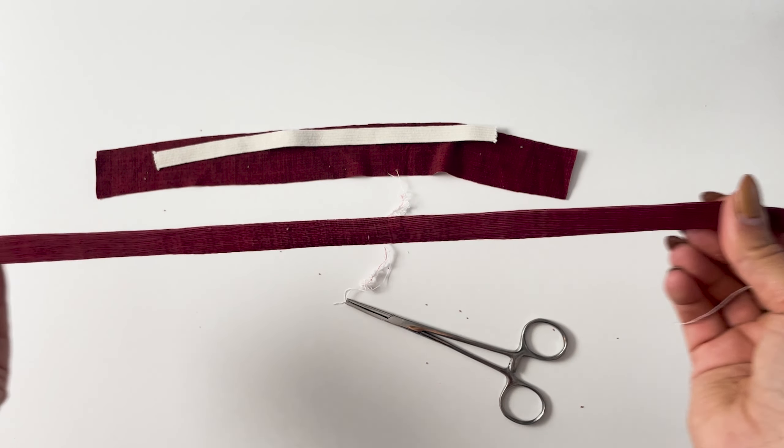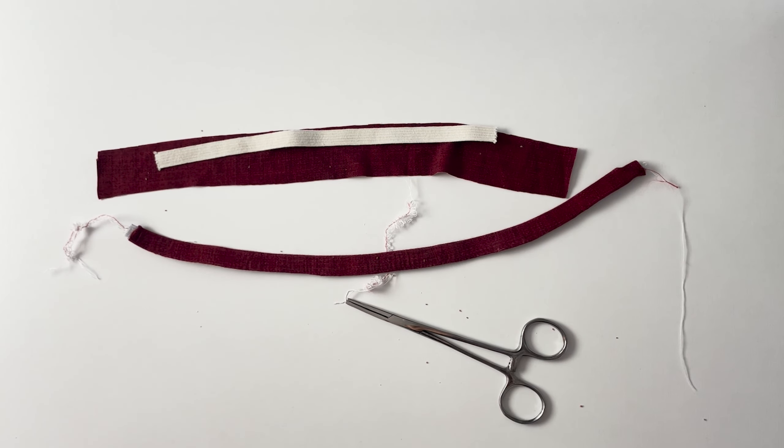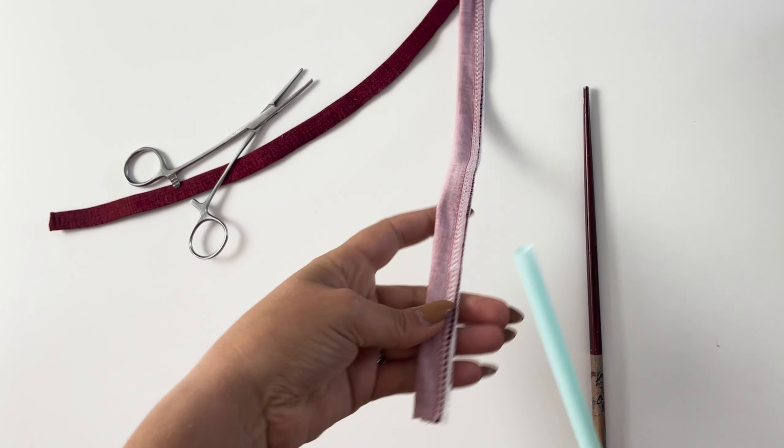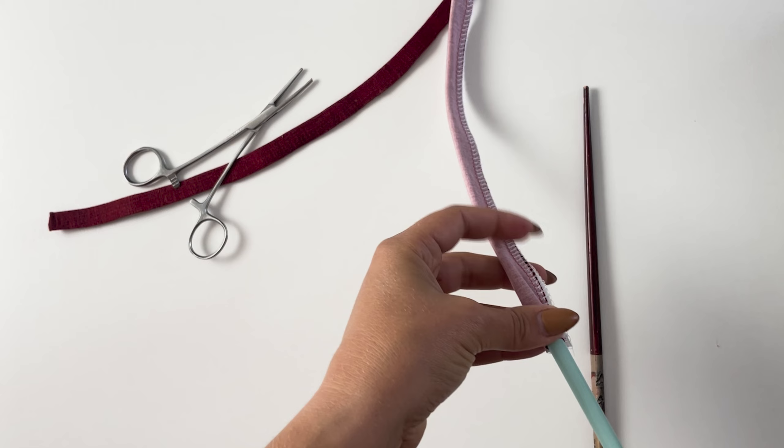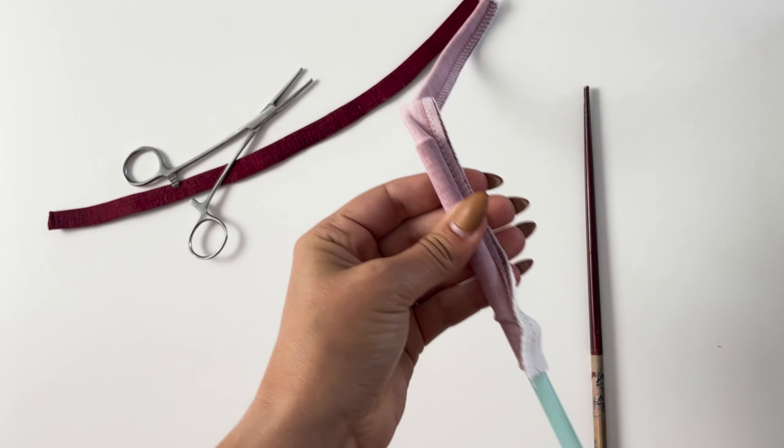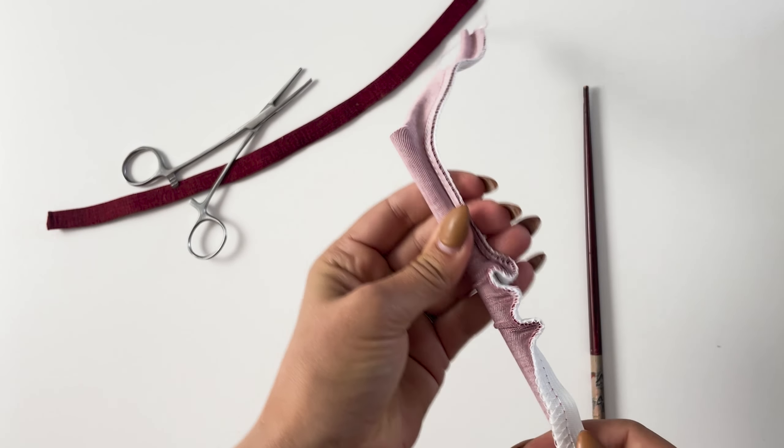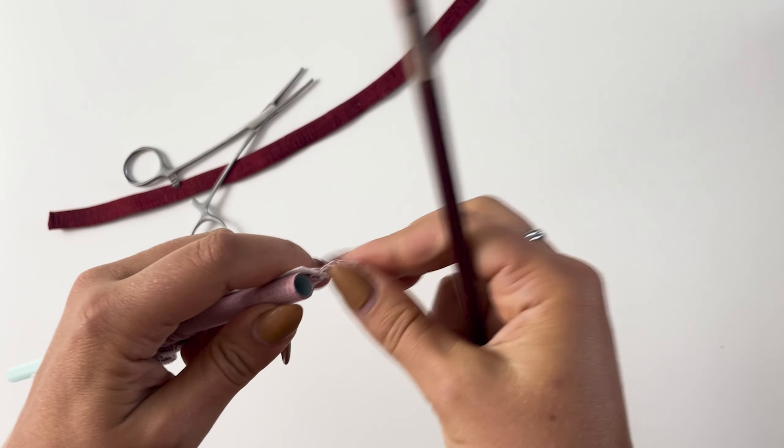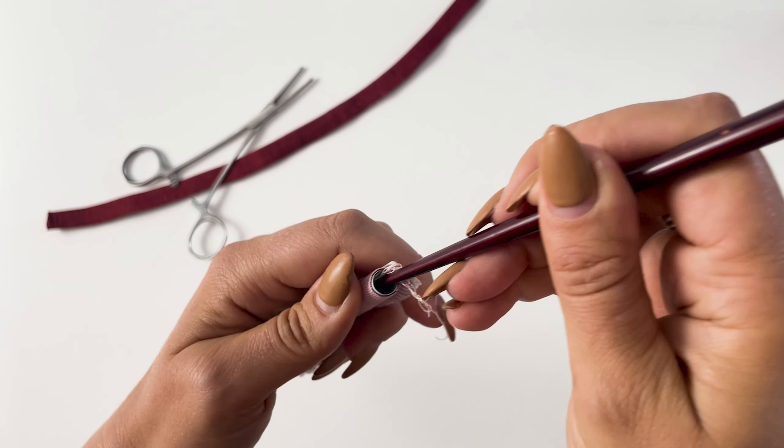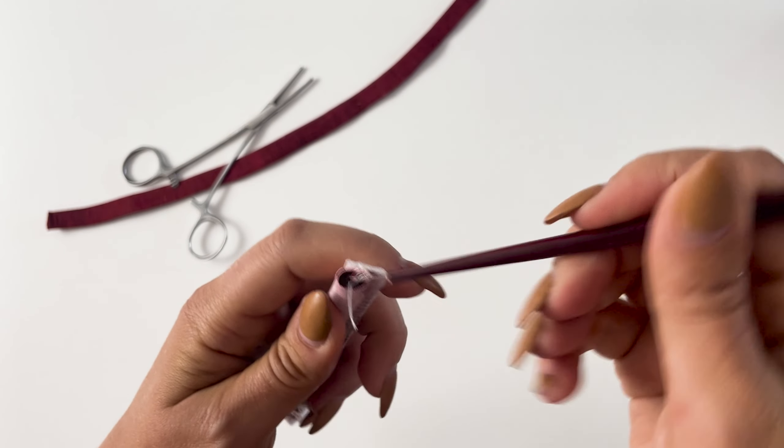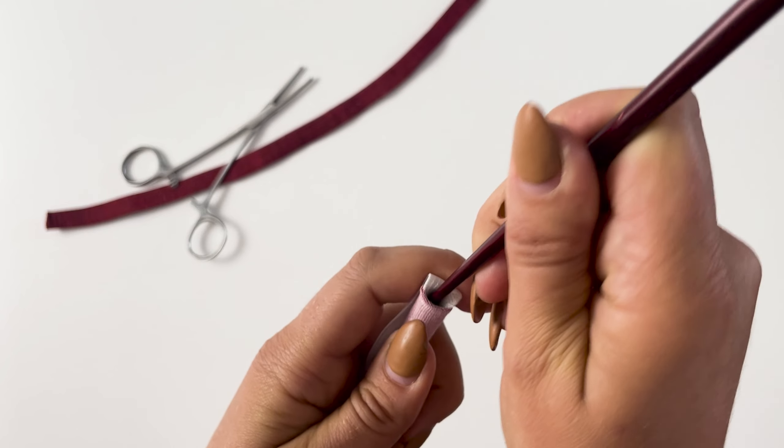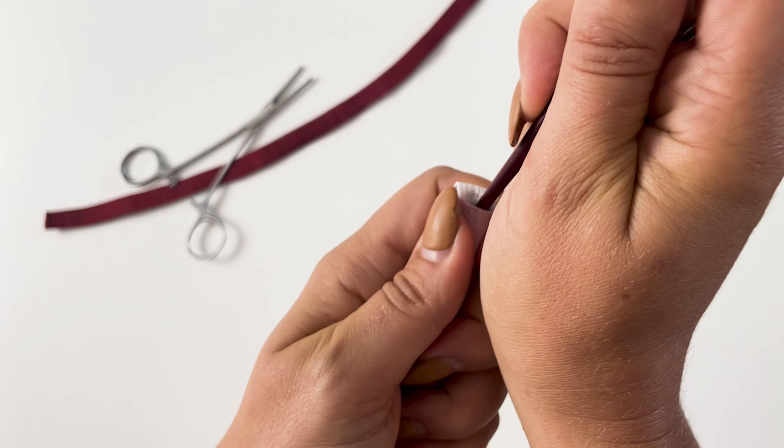The next method involves a straw and a chopstick. A boba straw would work really well for this. Push the straw all the way through, then you want to get your serger tail and your thread into the hole and then you keep pushing it through.